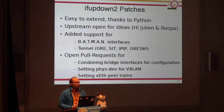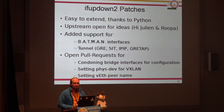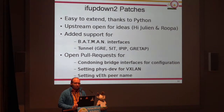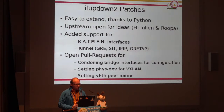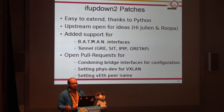Some things were missing, but it's Python with an add-on infrastructure, so I added support for configuring Batman interfaces and tunneling interfaces like GRE tunnels. The upstream is very cooperative — I think it's been six or seven pull requests within the last month, mostly merged. So the problem of configuring interfaces is solved. There is a building block we can use now.